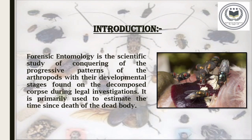Now let's move on to the introduction. The first question that comes to mind is: what is forensic entomology? Forensic entomology can be defined as the scientific study of the invasion and succession pattern of insects with their developmental stages found on a decomposed corpse during legal investigation. It involves the application of the study of arthropods like arachnids, centipedes, millipedes, and crustaceans to criminal cases. They are primarily associated with death investigations; however, it may also be used to detect drugs and poisons, determine the location of the incident, and find the presence and time of the infliction of wounds.